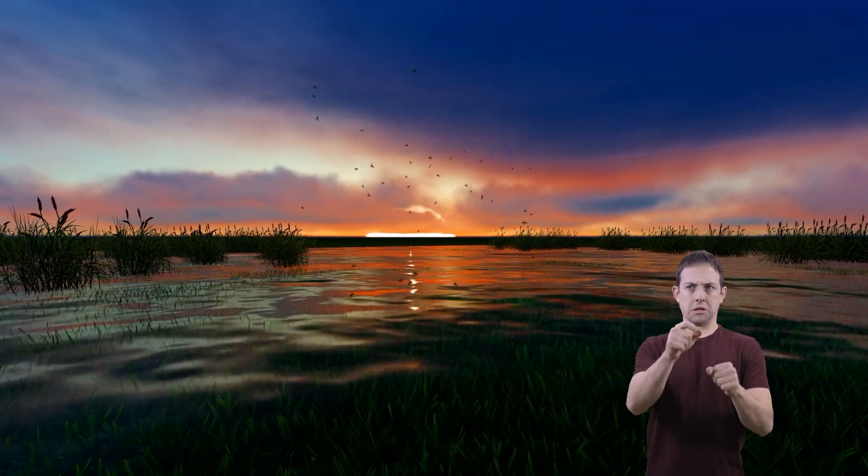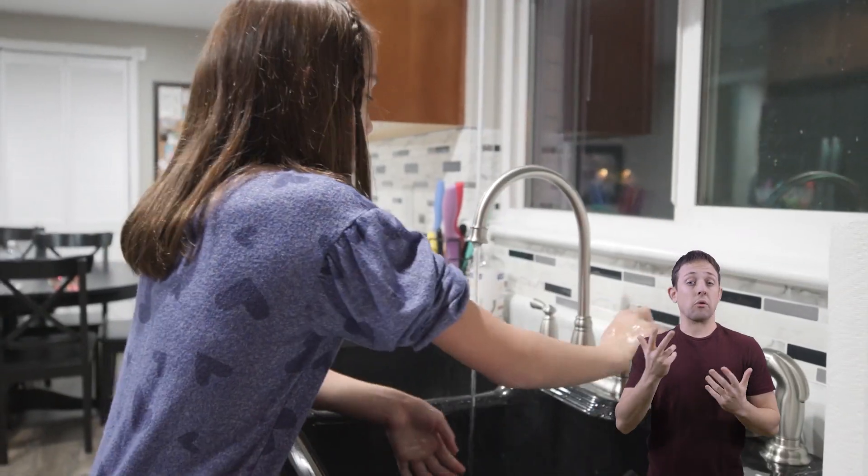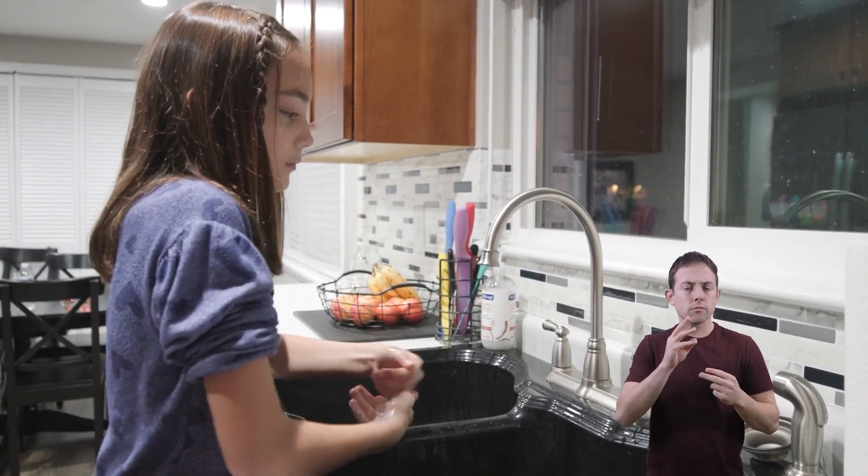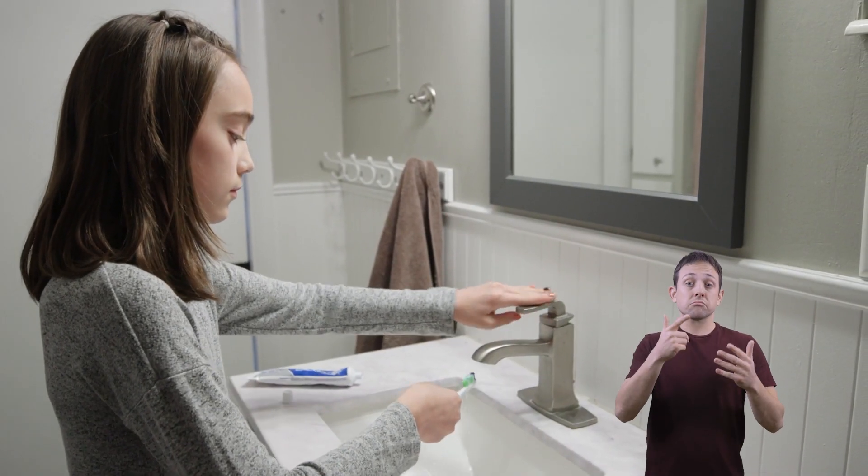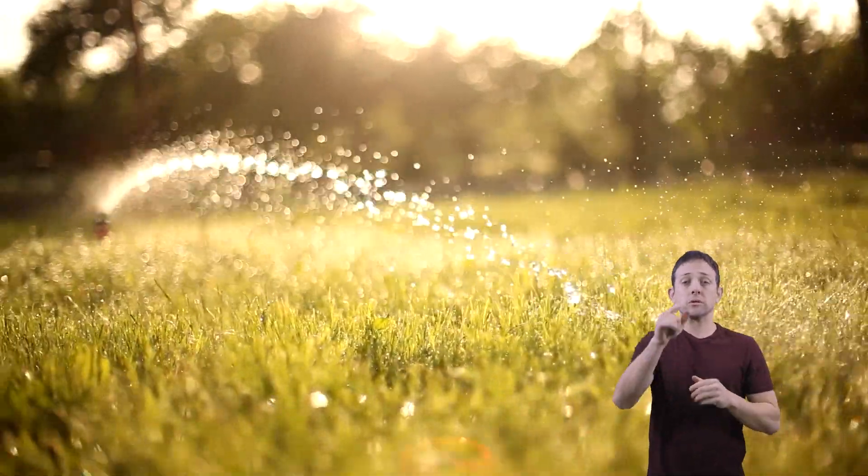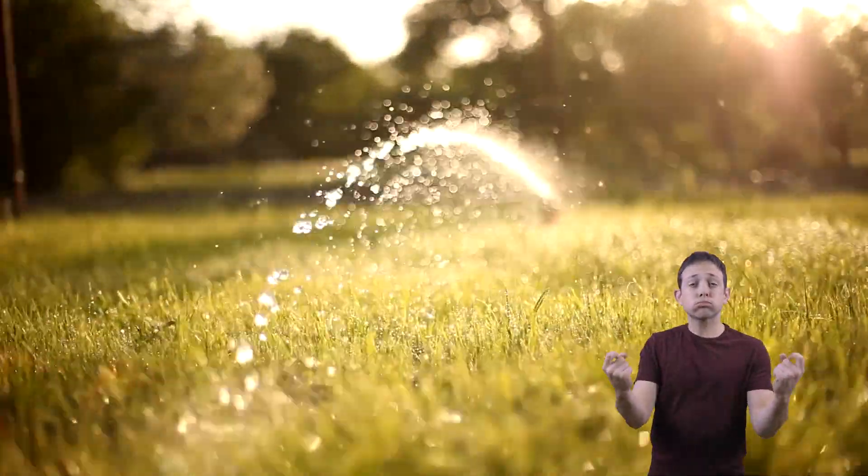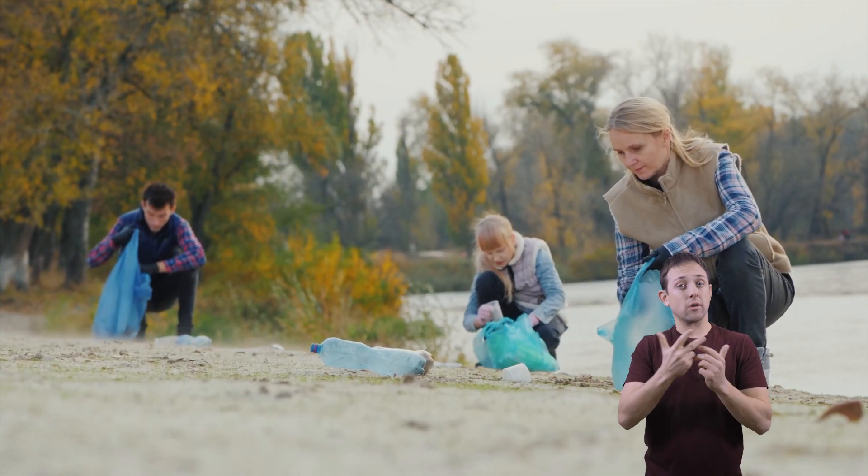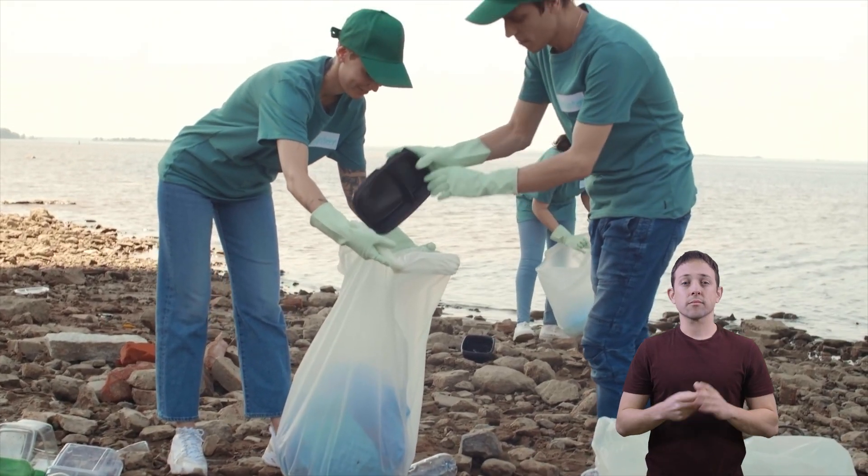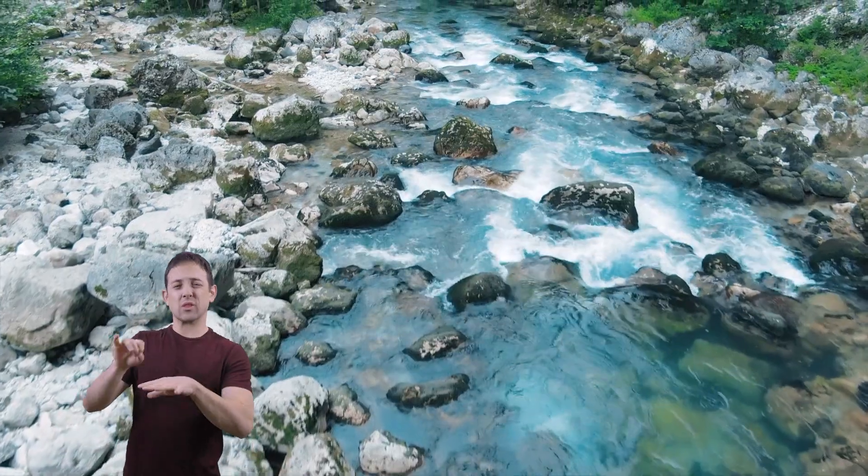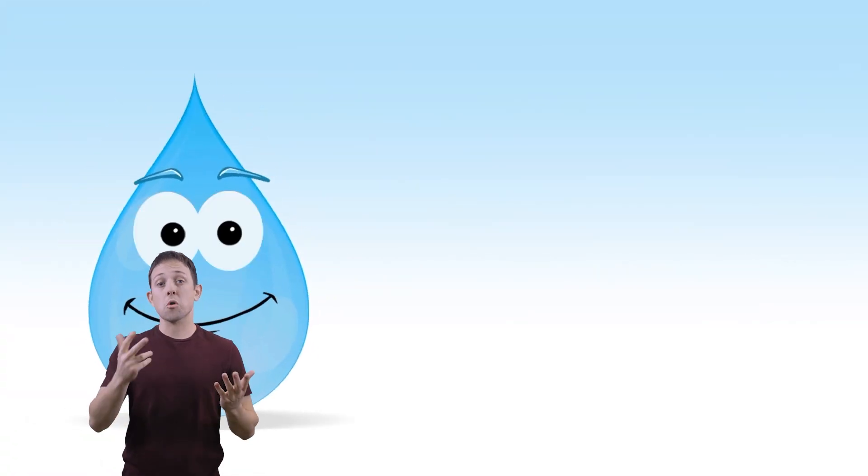So, how can you help? Well, one of the best things you can do is to conserve water whenever you can. Whether that means turning off the faucet when you're brushing your teeth or taking a shorter shower, every little bit helps. You can also talk to your parents about watering your lawn less during hotter months. Another way to protect the water is to keep it clean, which means no littering, especially in your local lakes, rivers, and streams.